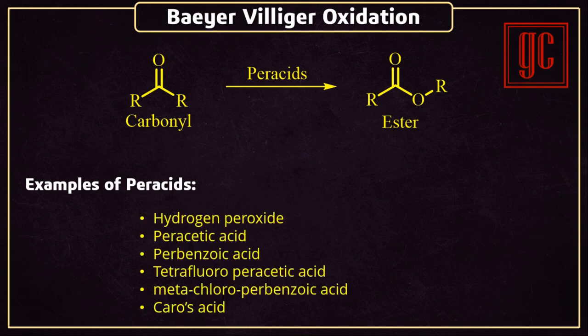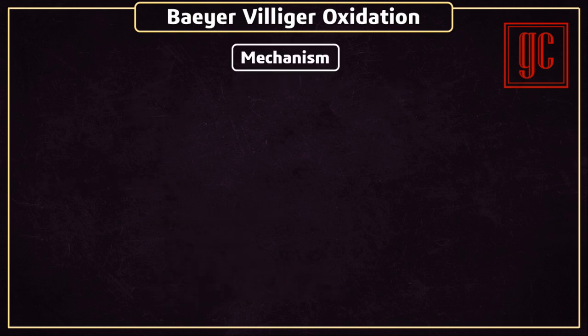These are some examples of peracids: hydrogen peroxide, peracetic acid, perbenzoic acid, tetrafluoroperacetic acid, metachloroperbenzoic acid, and Caro's acid.